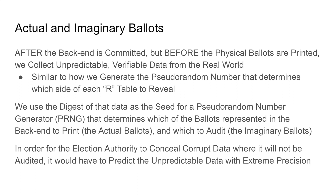If, for example, the specified data set is the opening and closing prices for five different stocks on a given day, and each price has 30 plausible values, then there are more than 500 trillion plausible outcomes, each of which corresponds to a completely different sampling of ballots. So even if the election authority wanted to hide corrupt data where it would be unlikely to be found, that's completely infeasible. On the other hand, if there are only a few erroneous items, then it's possible that they will escape detection by pure chance, but that's almost never enough to ruin an entire election.